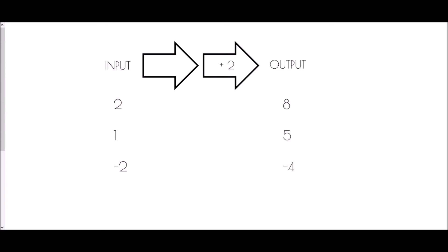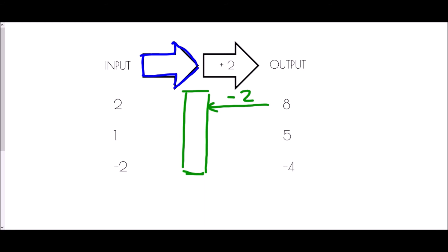In our last set of questions we're finding a missing part of the function machine. The missing element must work for all three pairs of inputs and outputs. Working backwards from the known last process of add two, I subtract two from eight to get six. So the question is: how do I get from two to six? It could be plus four, or multiply by three.